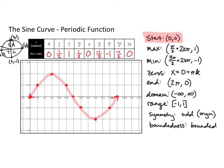This one curve ends at 2 pi comma 0. The domain of the extended function is all real numbers from negative infinity to infinity, and its range is from negative 1 to 1. It has odd symmetry — symmetrical about the origin, so if you rotated the graph around the origin it would land on top of itself. It is also bounded above and below.